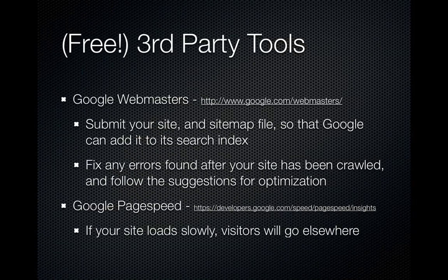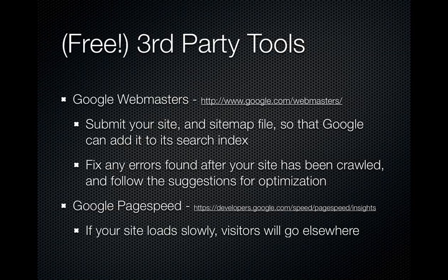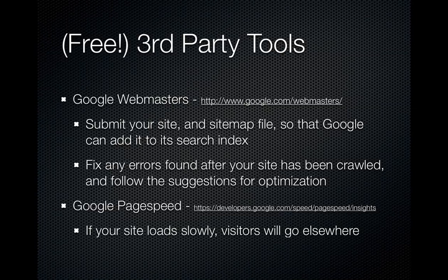Once you've done all that, there are some other things you can do to go even further and get extra credit, so to speak. The first thing we recommend is that you log into the Google Webmaster site. After you've registered, you can submit your site and your sitemap file to Google, which will essentially schedule your website to be crawled by Google's web bot. It may take a few days, but they'll typically list any errors found on your website — things like a missing page or a dead link. We highly recommend that you fix any errors they find and follow the suggestions they have for optimization.